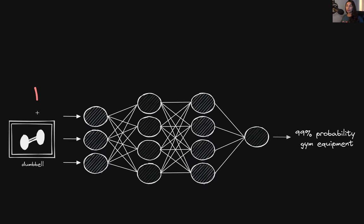An image classifier accepts images as its input, and as output the classifier will assign probabilities to various classes for which it's been trained on, to specify where it thinks the given image best belongs among these classes. For this example, let's suppose that we are working with an image dataset of grayscale images of gym equipment, and our classifier is just a binary classifier that will let us know whether or not the given image is gym equipment. So we can actually make use of this model to generate images of gym equipment.